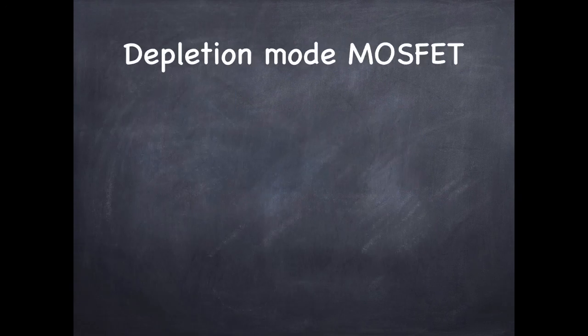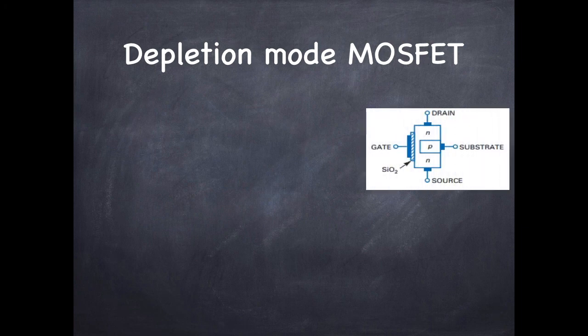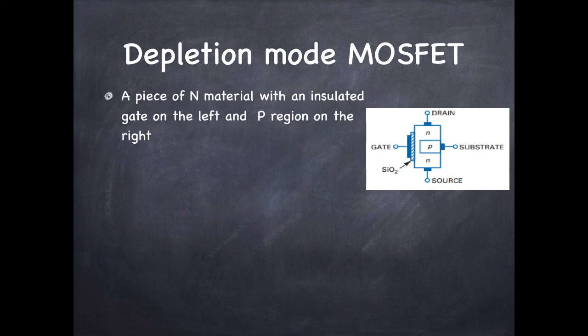Now we will discuss the different types of MOSFETs. We will start with depletion mode MOSFET. As you can see in the figure, in depletion mode MOSFET, a piece of N material with an insulated gate on the left and P substrate on the right.